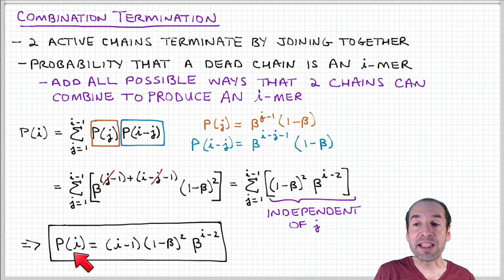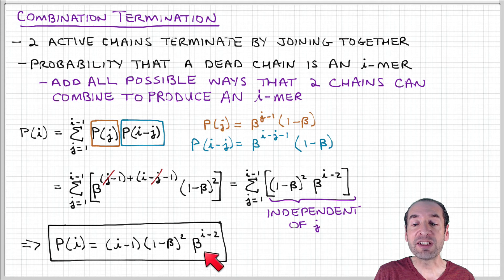So the probability that a dead chain is an i-mer is i minus 1 times this quantity 1 minus beta squared beta to the i minus 2.